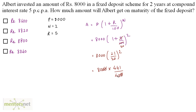Cancelling zeros, we get 4 × 20 = 80, then 441 × 20 = 8820. So the amount is Rs. 8820. Option B, 8820, is the correct answer.